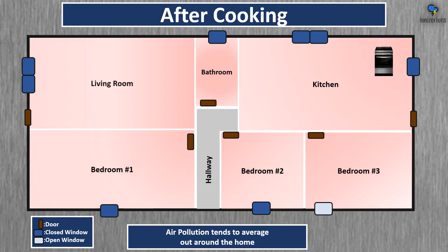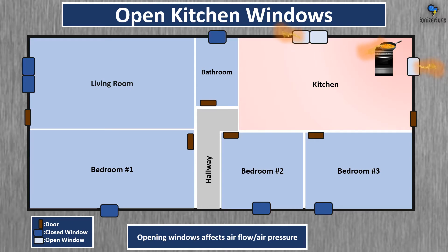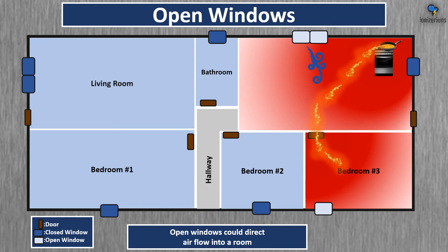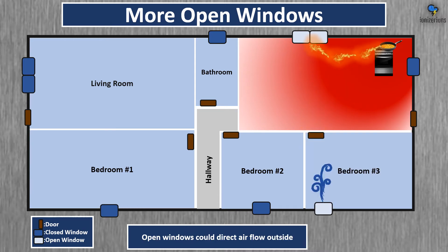After you're done cooking, air pollution tends to average out across the rooms in the home. It's generally a smart idea to open windows when cooking to help the air pollution go outside instead of spreading indoors. Sometimes opening windows can backfire — on a very windy day it can actually redirect air pollution into another room. This happens often depending on how a home is set up. Which windows you have open and closed affects air pressure and where the air pollution goes.